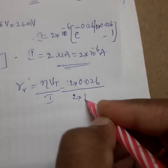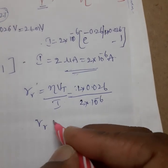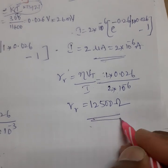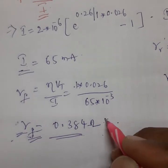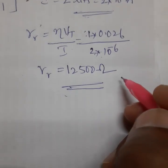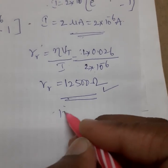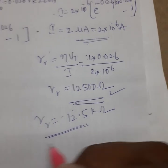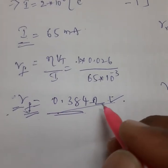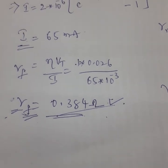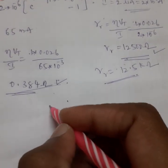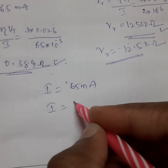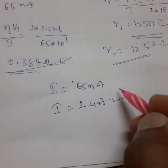The reverse current value is approximately 2 micro amperes = 2 × 10⁻⁶ A. Substituting into the resistance formula: r_r = 1 × 0.026 / (2 × 10⁻⁶) = 12,500 ohms. So the forward dynamic resistance is 0.384 ohms and the reverse dynamic resistance is 12,500 ohms or 12.5 kilohms. The key difference is in the current: forward current is 65 milliamps while reverse current is only 2 micro amperes.